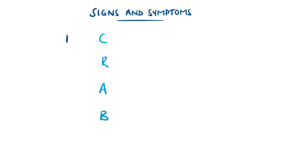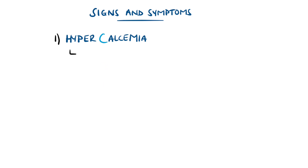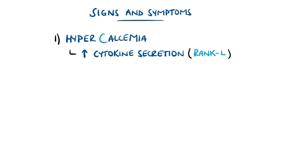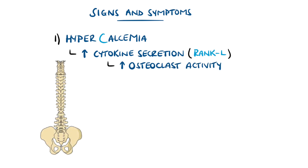C is for hypercalcemia, which occurs due to an interaction between the bone microenvironment and the myeloma cells that causes increased osteoclast activity, which comes from cytokine secretion like RANK-L, which ultimately means more bone being resorbed.